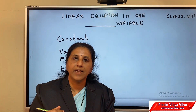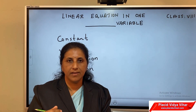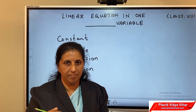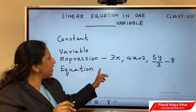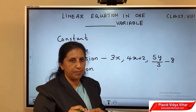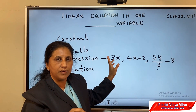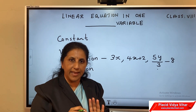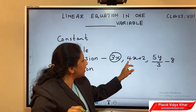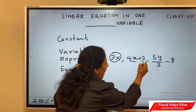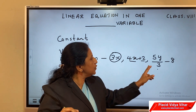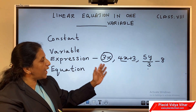Move to the next term: expression. What are expressions? Expressions are obtained by combining variables and constants using mathematical operations — addition, subtraction, multiplication, and division. Let's have some examples of expressions: 3x, 4x plus 2, and 5 by 3 minus 8. All these are expressions. In the first expression, you have the variable x with the constant 3 — that is an expression having only one term. In 4x plus 2, there are 2 terms: 4x and 2. In 5 by 3 minus 8, there are also 2 terms. You can have expressions with more than one or two terms.